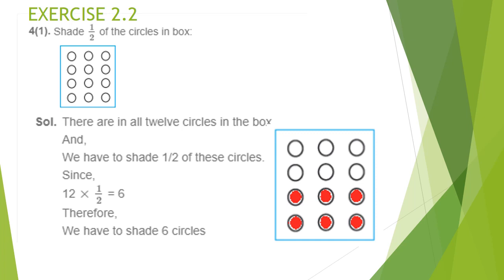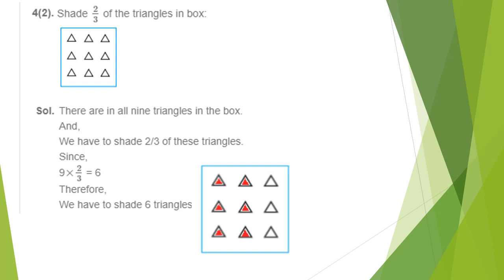It is shaded and shown here. Next question: shade 2/3 of the triangles in the box. Counting, there are 9 triangles. We have to shade 2/3 of these 9, so we write 2/3 × 9, which equals 2 × 9 ÷ 3. Cancelling 3 and 9, we get 6 triangles. That means 2/3 of 9 triangles — out of 3 parts, 2 parts — we have to shade, which is 6 triangles total.